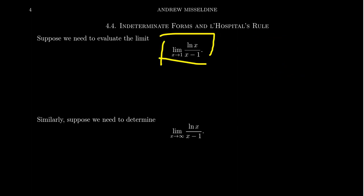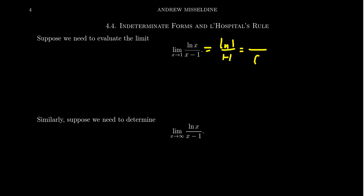Suppose we want to evaluate the limit as x approaches 1 of the natural log of x over x minus 1. If we just naively plug in x equals 1, we get the natural log of 1 over 1 minus 1, which gives us the indeterminate form 0 over 0. In many situations we can do algebraic tricks like rationalizing or clearing fractions, but what do you do with the natural log to cancel the x minus 1? It seems too difficult — we'd have to use squeeze theorem arguments.